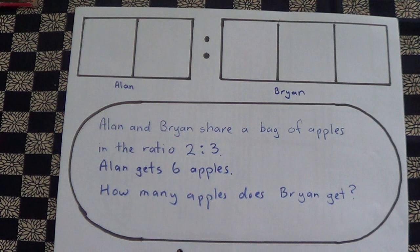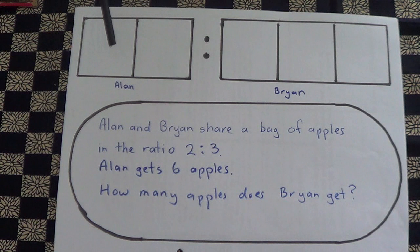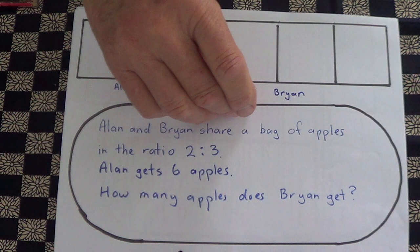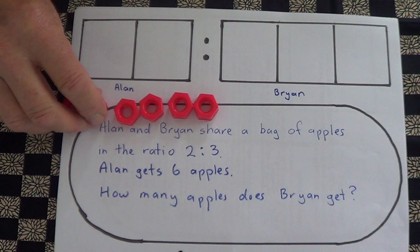The question is: Alan and Brian share a bag of apples in the ratio 2:3. So we've got two boxes here and three boxes here. Alan gets six apples. Here's Alan's six apples, and we've got to share them between these two boxes.